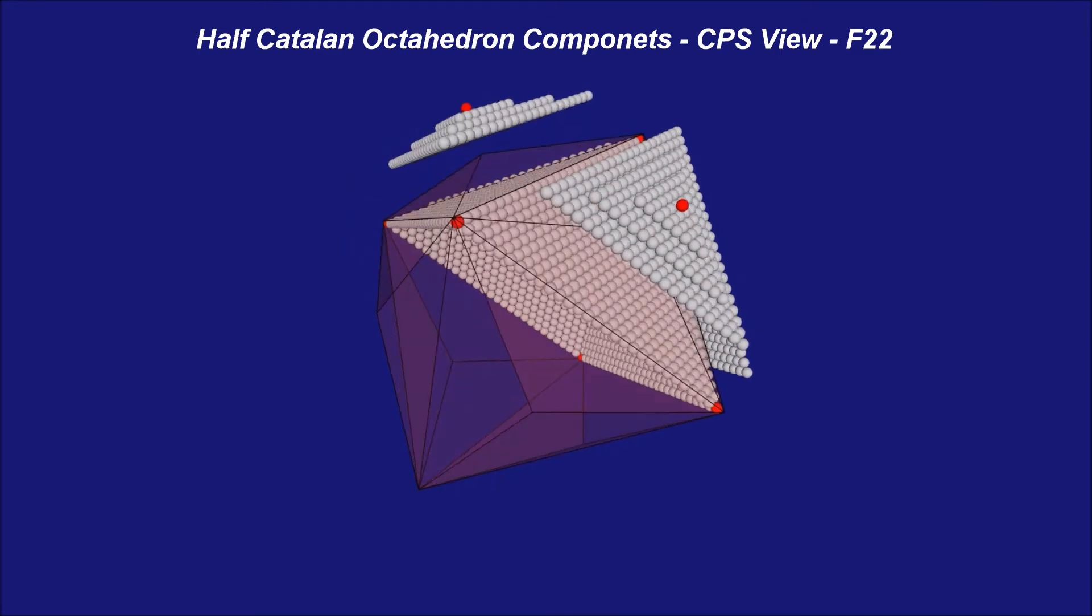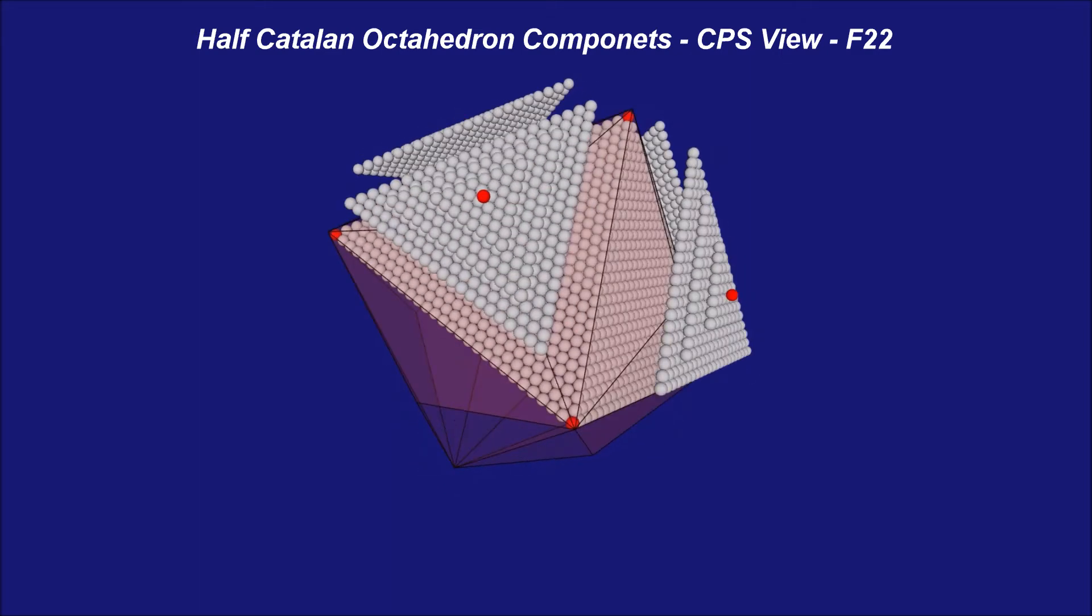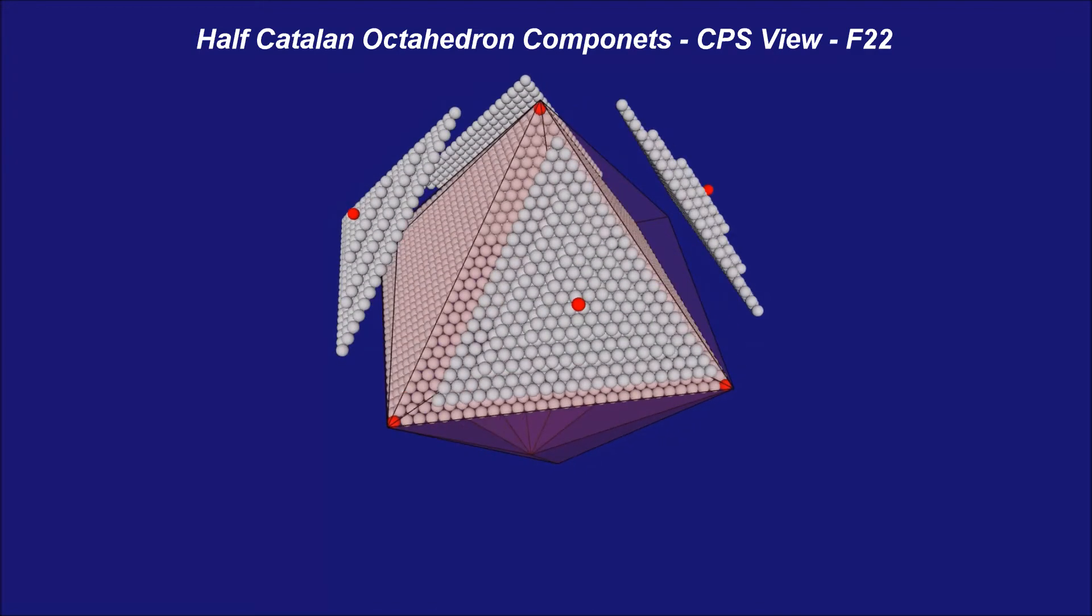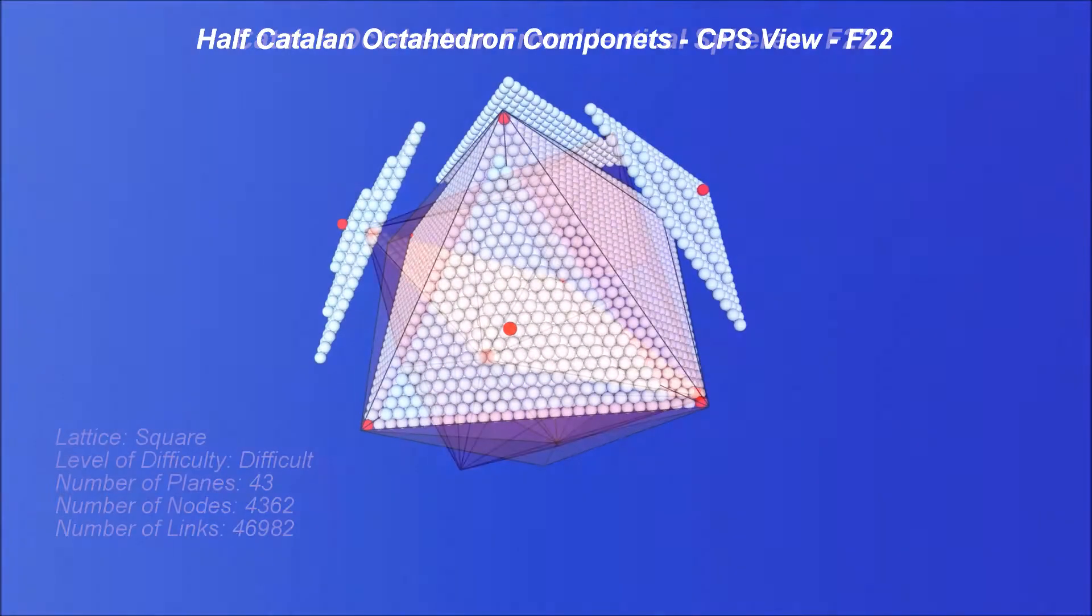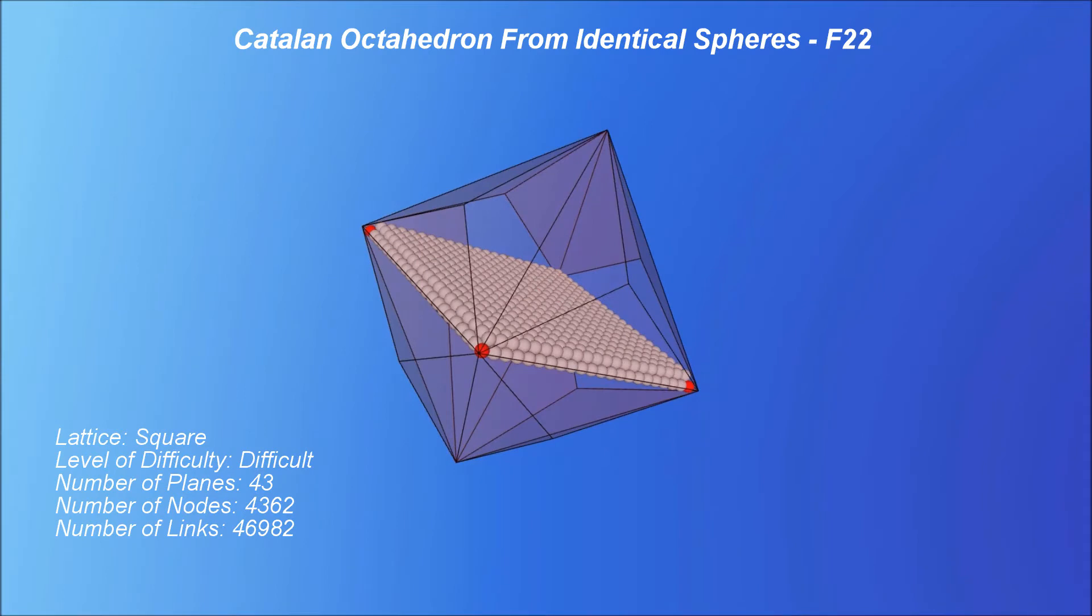To better see this structure, the spheres defining the vertexes have been colored in red. Also, we have decided to show only half of the Catalan octahedron. This view declutters the structure and lets us contemplate the essential components.